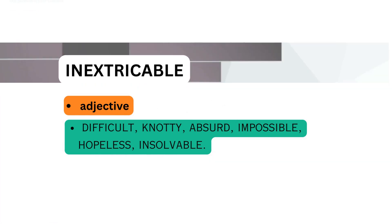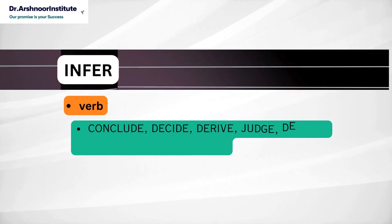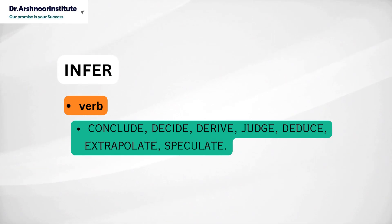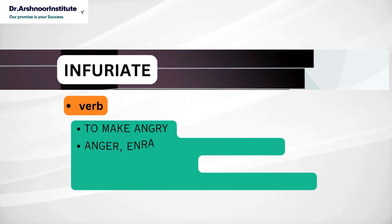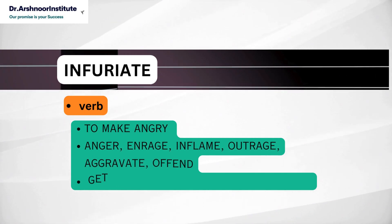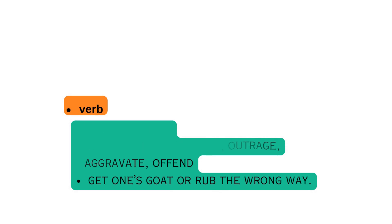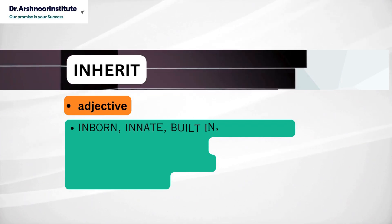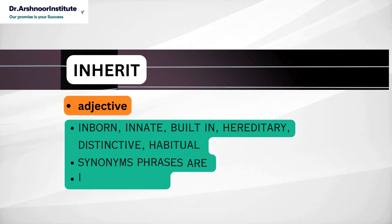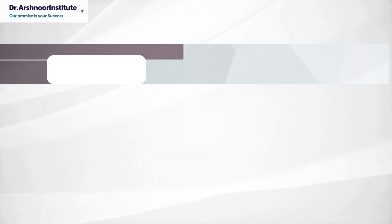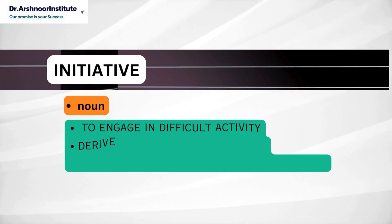Next word is infer. It's a verb and it means conclude, decide, derive, judge, deduce, extrapolate, and speculate. Next word is infuriate and this is a verb. It means to make angry and the synonyms are anger, enrage, inflame, outrage, aggravate, offend. Synonym phrases for this is get one's goat or rub the wrong way. Next word is inherent. It's an adjective. It means inborn, innate, built-in, hereditary, distinctive, habitual and synonym phrase is in one's blood. Next word is initiative and this is a noun. It means to engage in difficult activity and synonyms are drive, killer instinct, vitality, assertiveness, first step, aggressiveness.